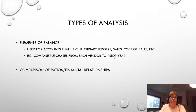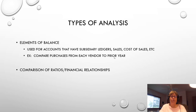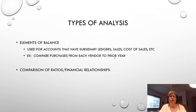Then we look at elements of a balance — starting with anything that has a subsidiary ledger. You're comparing purchases from each vendor to the prior year. If a vendor you've never heard of appears — maybe a services vendor, which is more easily fraudulent — and there's a huge spike, those are things to look at. You can also look at it over sales or cost of sales, anything with a lot of components.